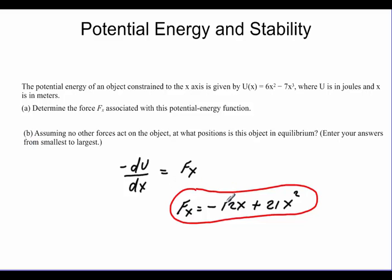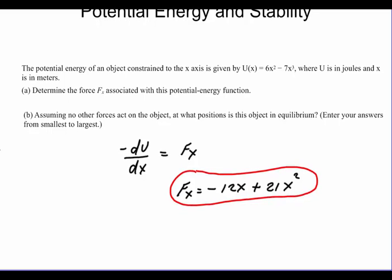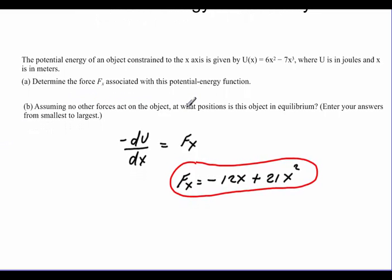So that would be what the equation to define what force is at any x distance, or multiplied by what your displacement is at that point. And that would determine what the force is. Now, assuming no other force is at the object, what position is the object equilibrium?